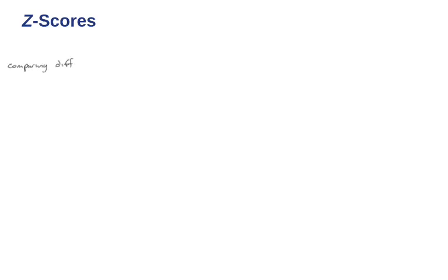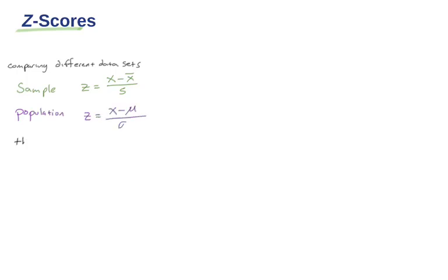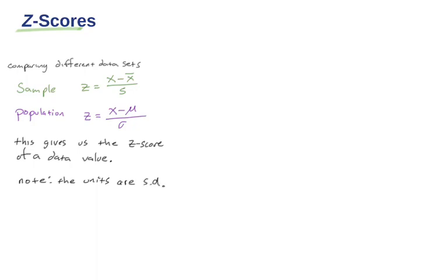We're going to continue our conversation with 3.3, z-scores and the empirical rule. A z-score is really a way of comparing different data sets. Here are a couple of formulas for the sample and then again for the population. It depends if we asked everyone or if we just got a small sample, and whether we're using x-bar or mu. It's a common measuring stick.